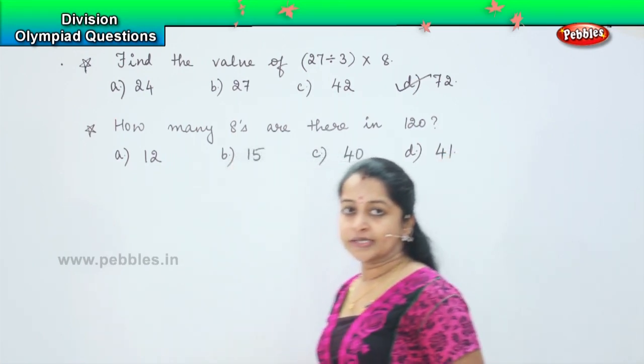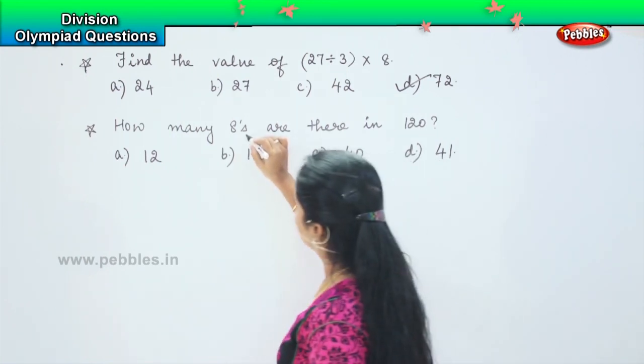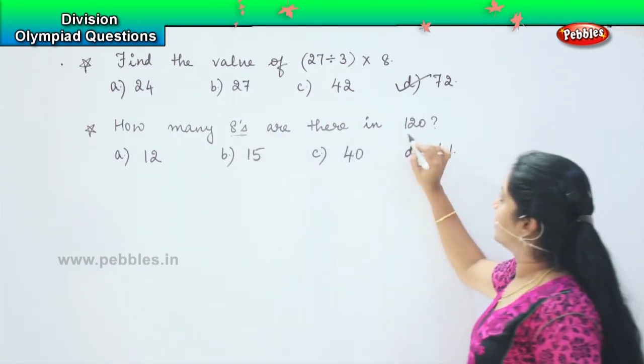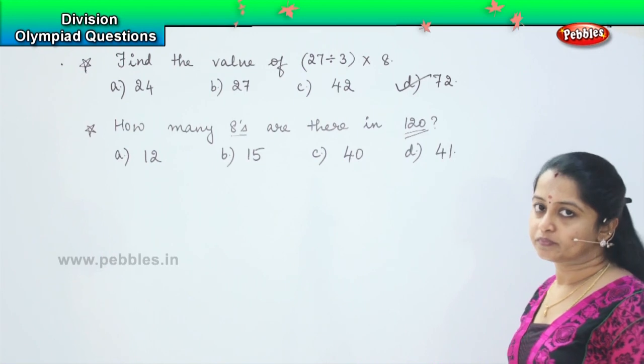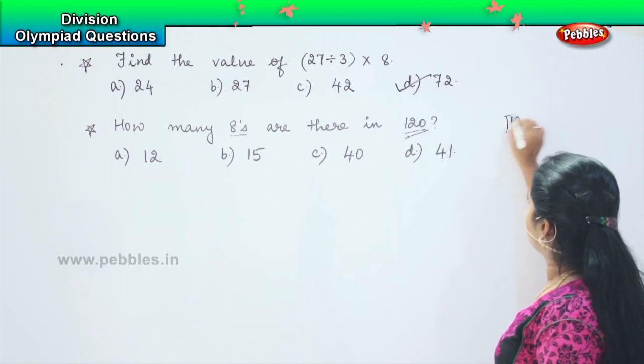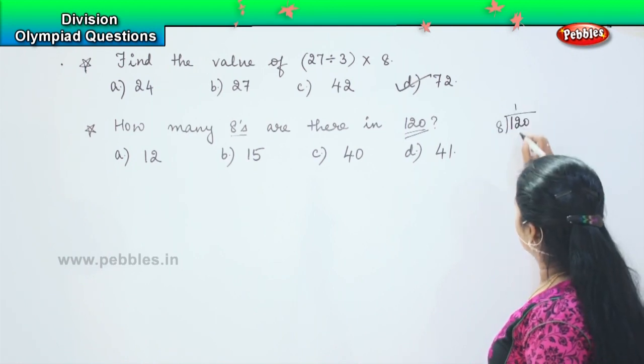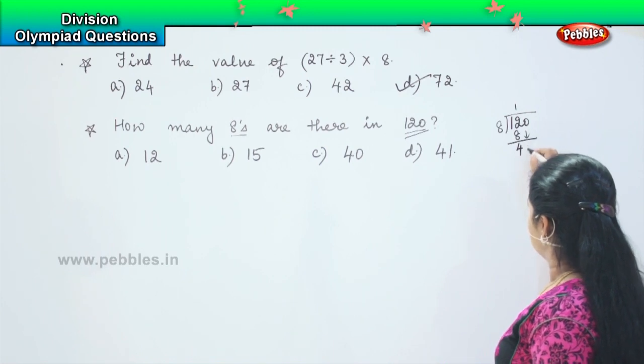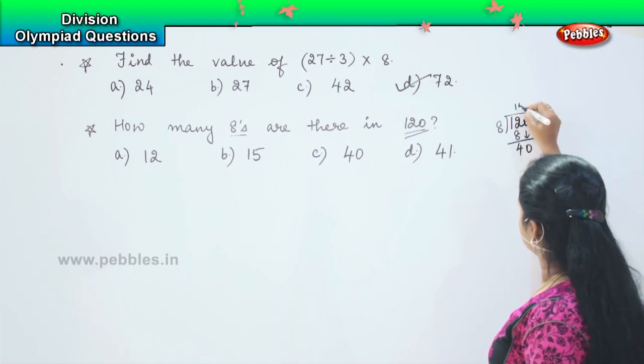So did you understand this question? We need to find out how many 8's are there in this number. We will just divide it and see. So 120 divided by 8. So 8 1's are 8. So here 12 minus 8 is 4, 0, 15.